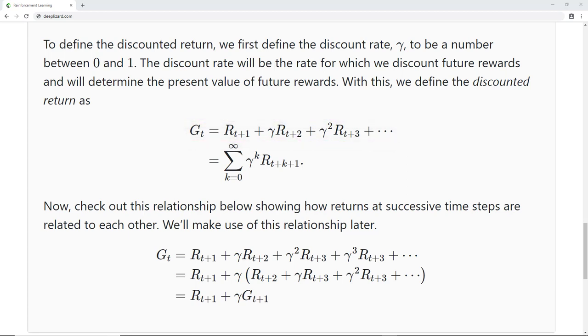If you've ever taken a finance course or learned about the time value of money, then this idea might be familiar to you. This definition of the discounted return makes it to where our agent will care more about the immediate reward over future rewards since future rewards will be more heavily discounted. So, while the agent does consider the rewards it expects to receive in the future, the more immediate rewards have more influence when it comes to the agent making a decision about taking a particular action. Now, check out this relationship showing how returns at successive time steps are related to each other. We'll make use of this relationship later. But pretty much we can see that the return at time t is equal to the reward at time t plus 1 plus the discounted return at time t plus 1.